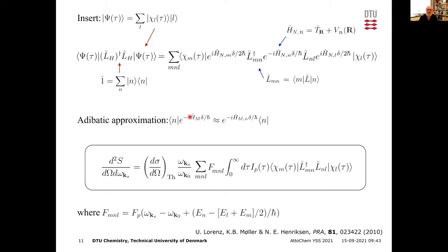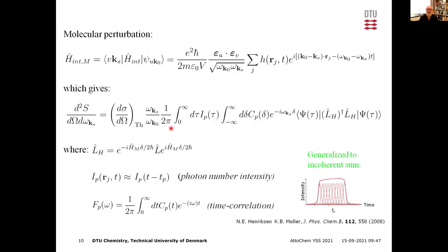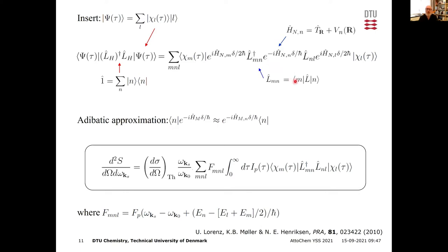This gives electronic matrix elements of the scattering operator, just as in the static theory — but now we also have many off-diagonal elements, and those are the focus of much of this talk. We then approximate the nuclear time-evolution operators by ignoring the kinetic energy operator, keeping only the potential energy, since they only act during the very short coherence time delta.